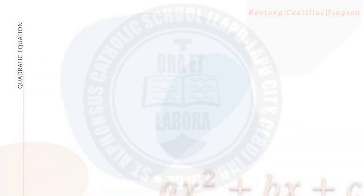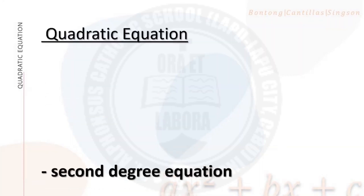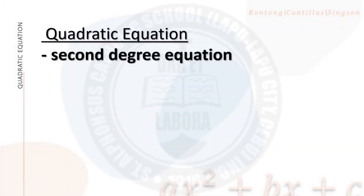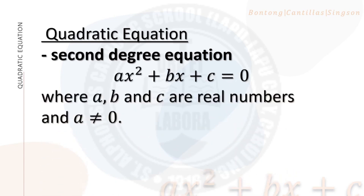Always remember: a quadratic equation in one variable is a second degree equation, meaning the highest degree is 2. The general form is ax squared plus bx plus c equals 0, where a, b, and c are real numbers, and a must not be equal to 0.